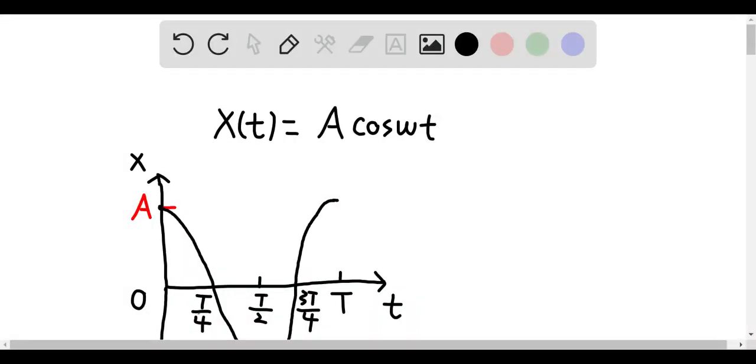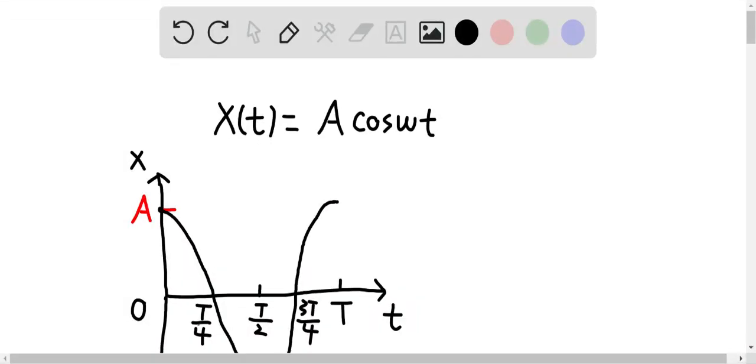This is the position versus time graph for simple harmonic motion. The position versus time function of simple harmonic motion is equal to A cosine omega t, where A is the amplitude, omega is the angular frequency, and t is the time.